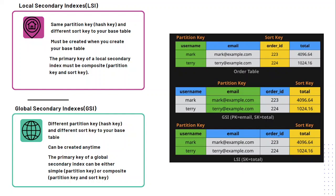Now let's look into the secondary indexes. There are two types: one is LSI, that is Local Secondary Index, and the second is the Global Secondary Index. A local secondary index is an index that must have the same partition key but a different sort key from the base table. It is considered local because each partition of the local secondary index is bounded by the same partition key of the base table. It must be created when we are creating our base table.